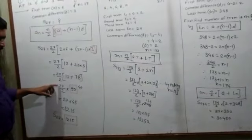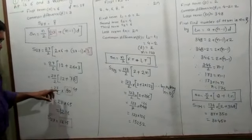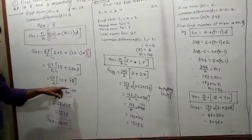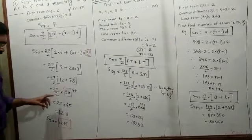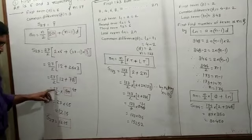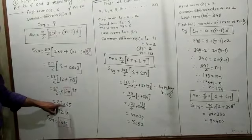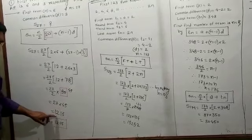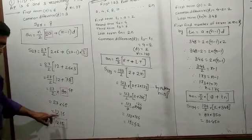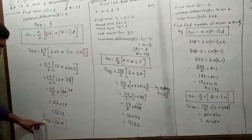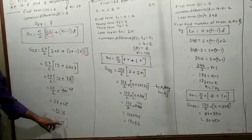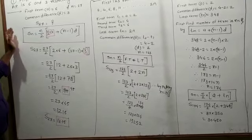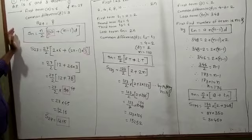27 upon 2 multiplied by 90 simplifies to 27 multiplied by 45. Then, 27 multiplied by 45 is equal to 1215. Therefore, S27 is equal to 1215. This is the activity based question — you have to fill the boxes and complete the question.